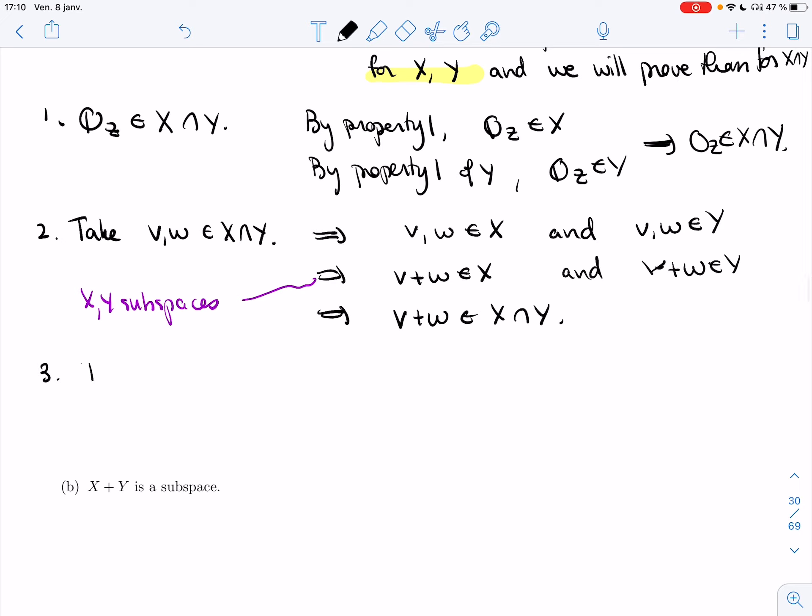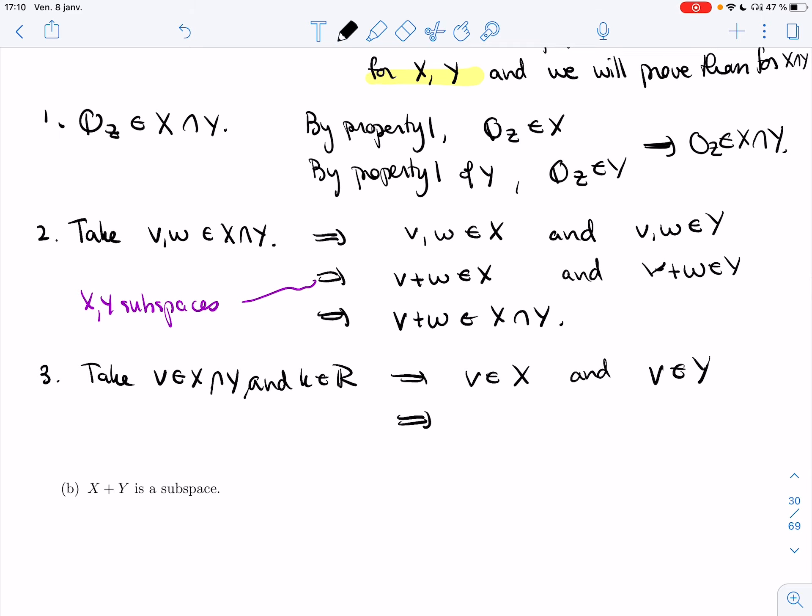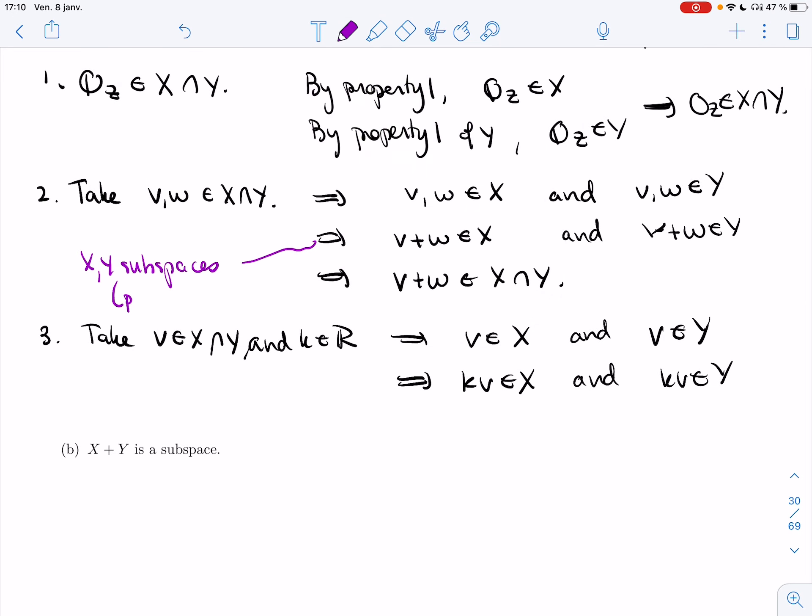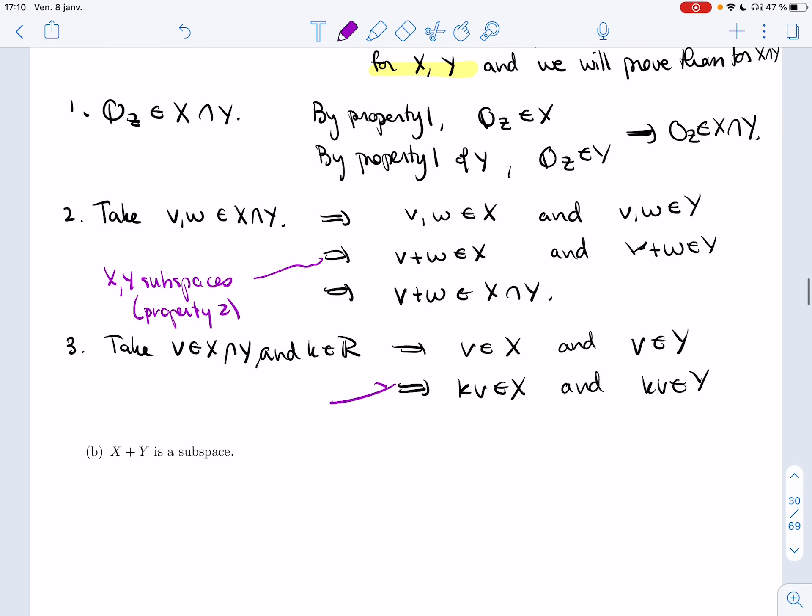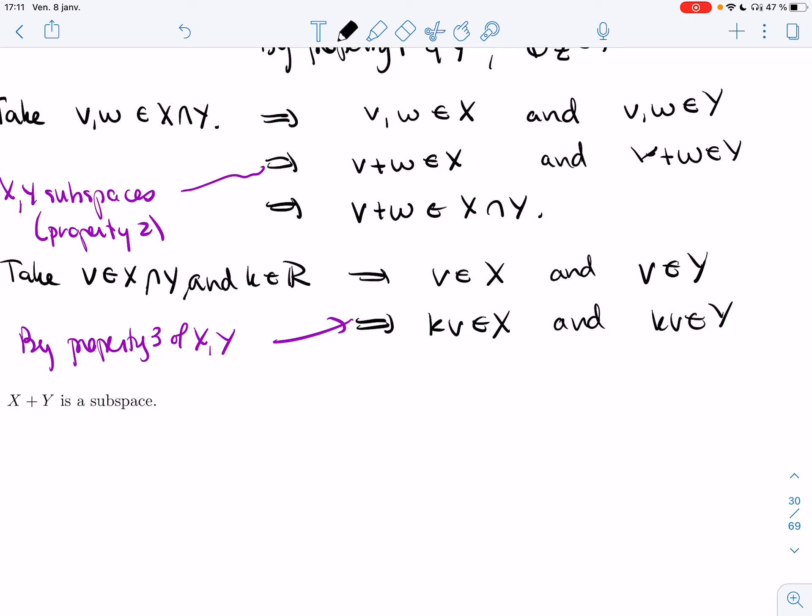Part three. Take v in X intersection Y and k in R. So we know that v's in X and v's in Y. Because they're subspaces, kv's in X and kv's in Y by property three of X and property three of Y. And so then, kv is in X intersection Y.